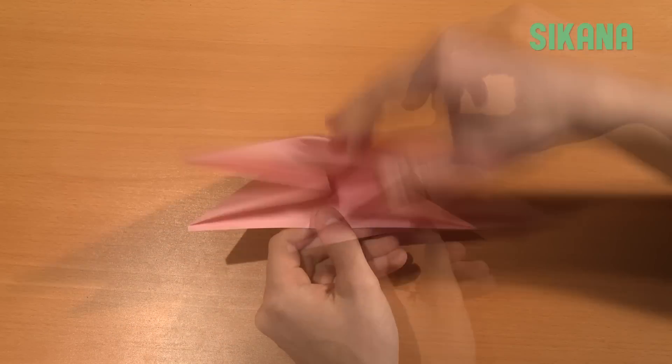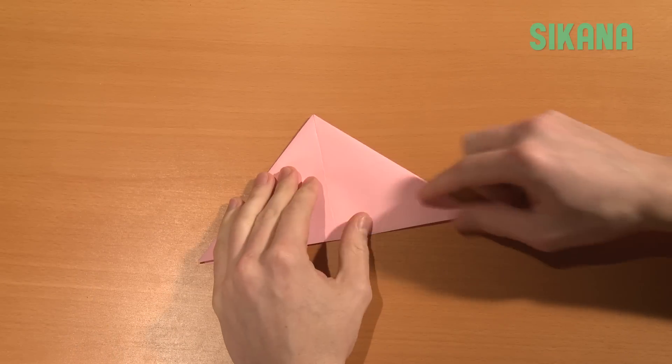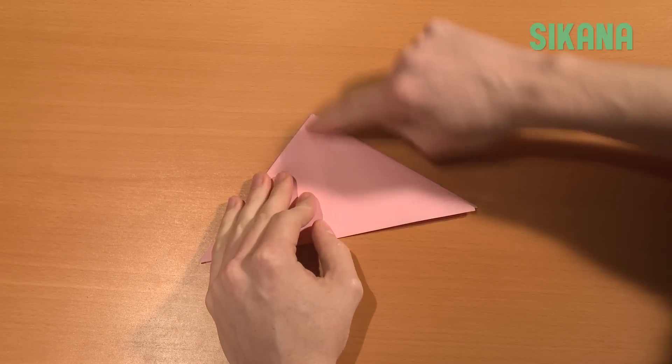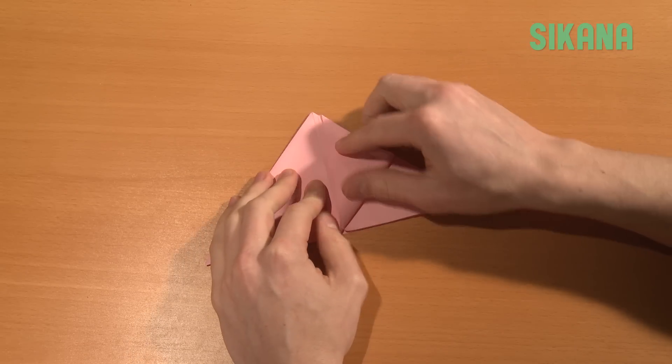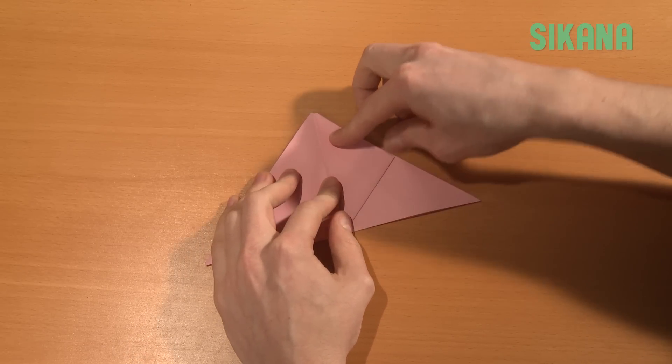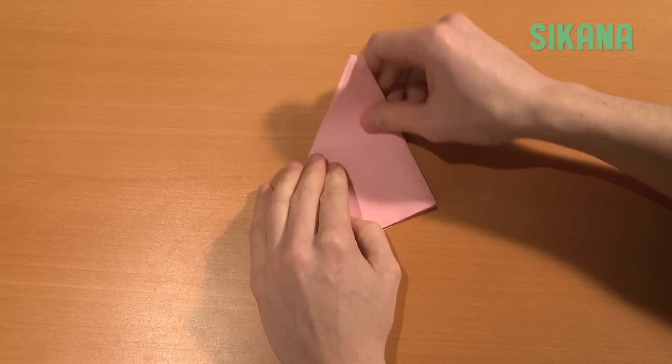This is the shape you should get. Fold this part onto the center line. Repeat for the other side.